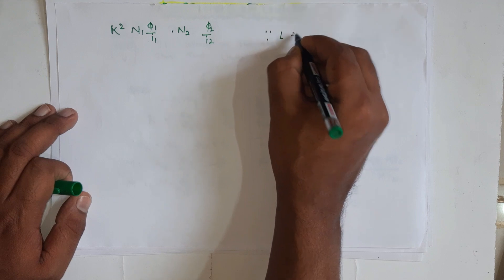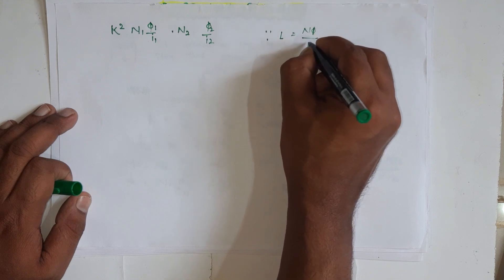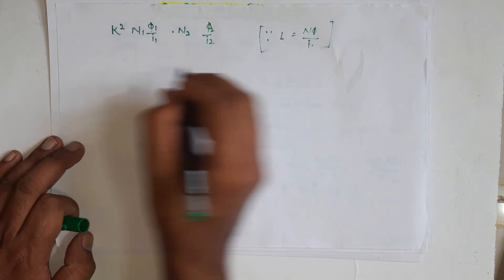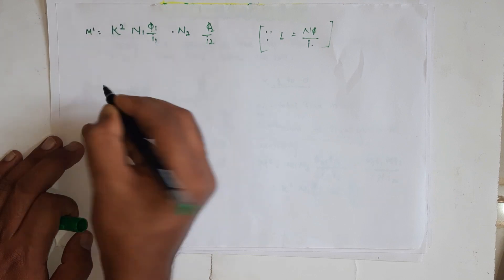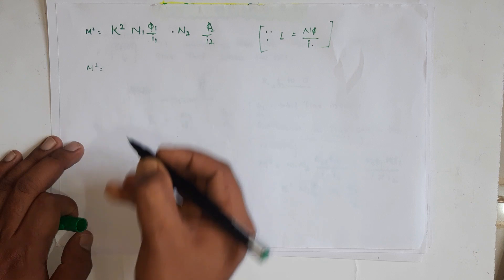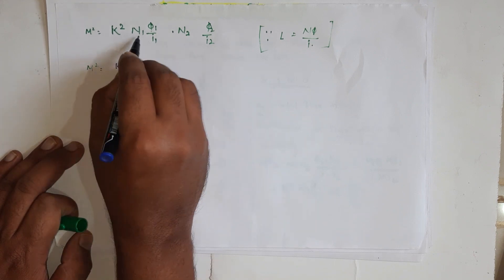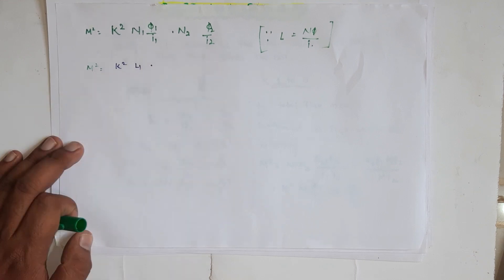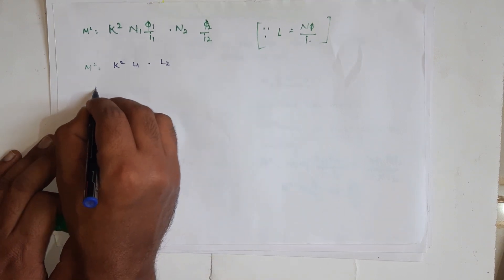We know that self-inductance L = N × phi / i, as derived in the previous video. So we can substitute: N1 × phi1 / i1 = L1 and N2 × phi2 / i2 = L2. Putting these values in, we get M² = k² × L1 × L2.